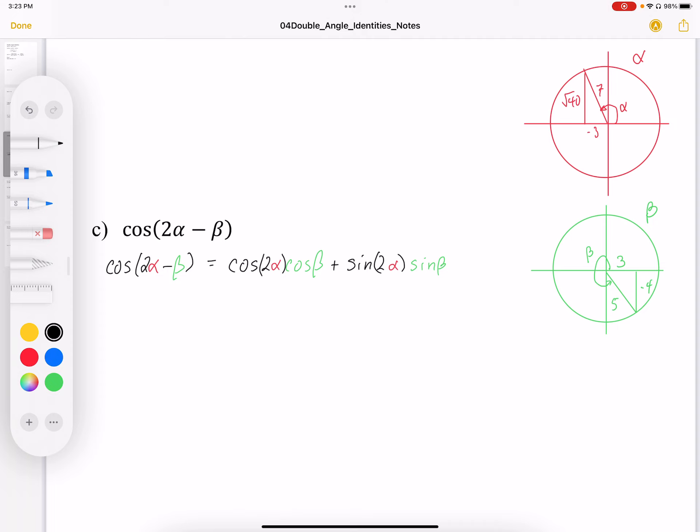So that's what I'm going to do. I'm going to rewrite that cosine of 2 alpha. And I'm going to express that with a double angle identity for cos. Now I have a choice of three identities. I'm just going to use the first one, which is cos squared alpha minus sin squared alpha. The cosine beta.